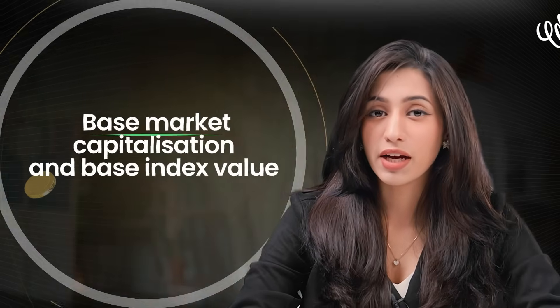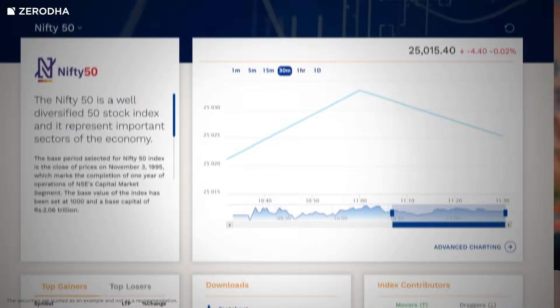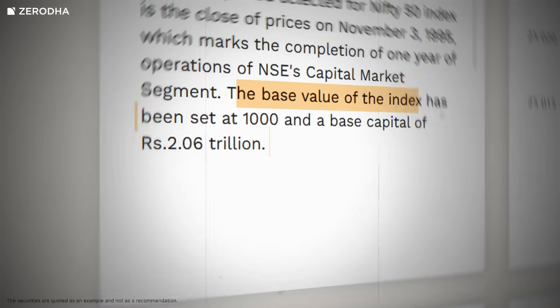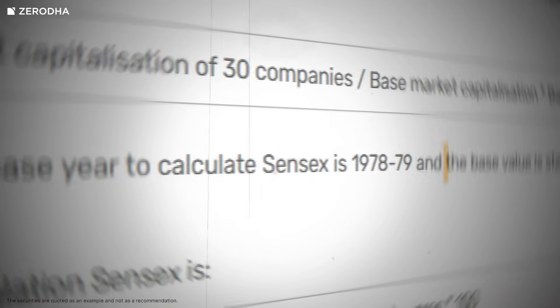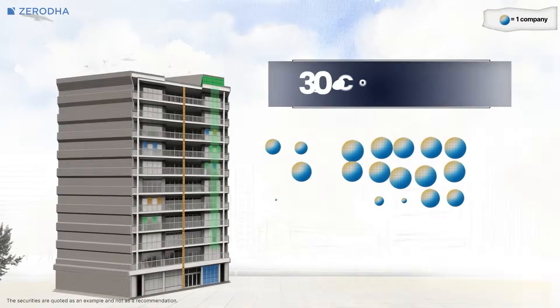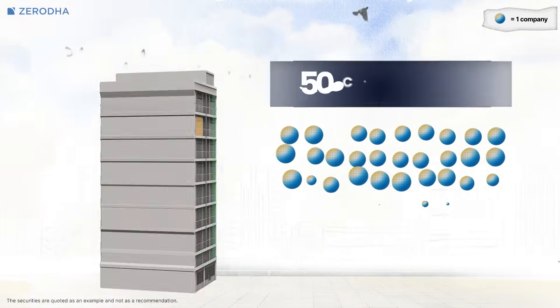Now let's understand base market capitalization and base index value — these are constants set by the stock exchanges. For Nifty, the base market capitalization is 2.06 lakh crore rupees and the base index value is 1,000. For Sensex, the base market capitalization is 2,501 crore rupees and the base index value is 100. For the calculation of an index's value, 30 companies are chosen for Sensex and 50 for Nifty. The free float market capitalization for all of these companies is calculated, added together, and then plugged into the main formula.